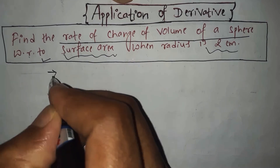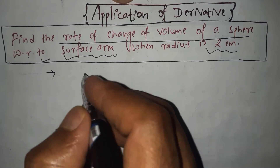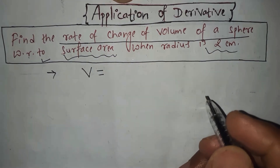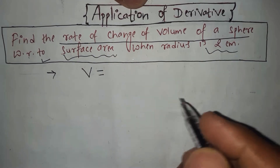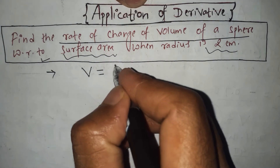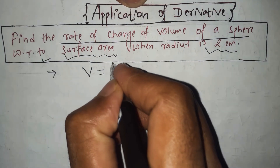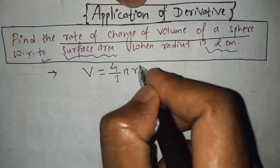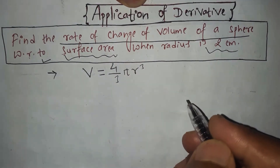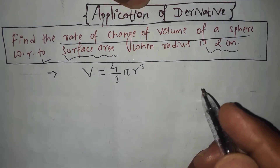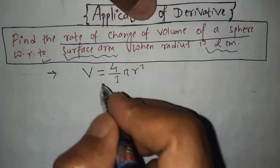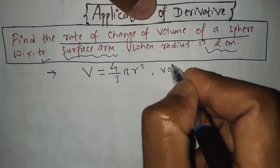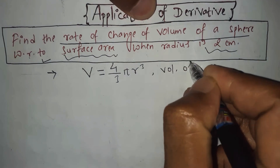First of all, let me write the formula for the volume of the sphere. The volume of the sphere, which is generally represented by capital V, is given by the formula: V = (4/3)πr³. This is the formula to find the volume of the sphere.